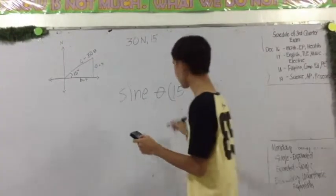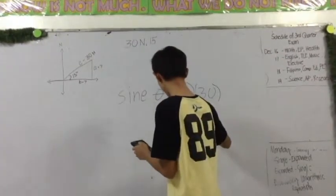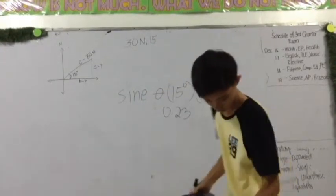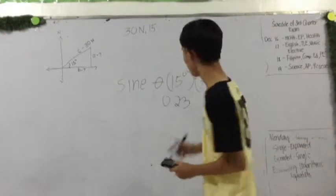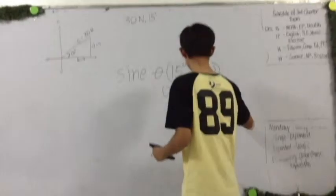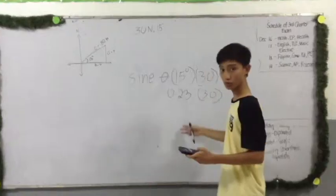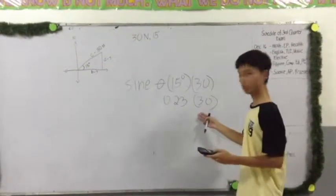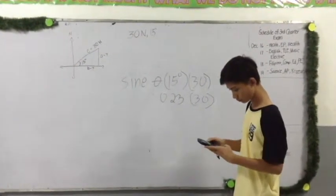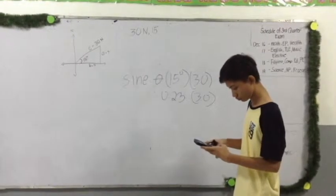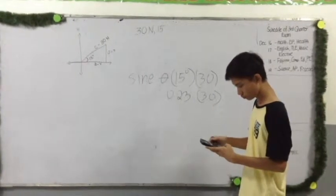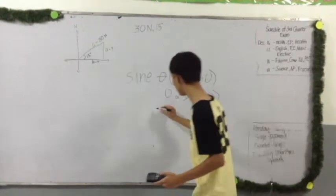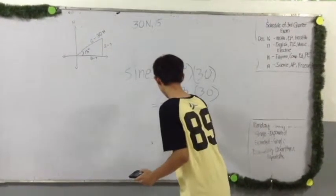Then multiply by 30. You will multiply 0.23 by 30. When we multiply both numbers, we get 7.8.